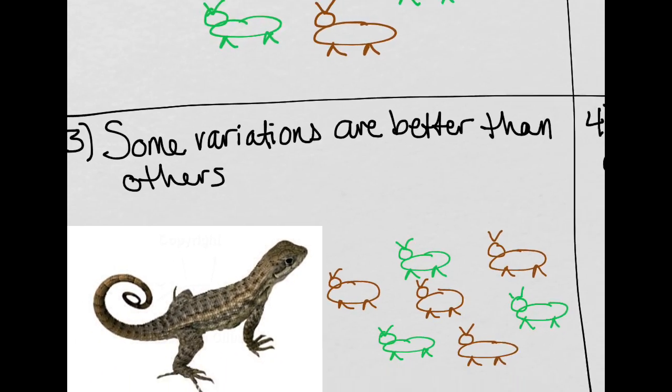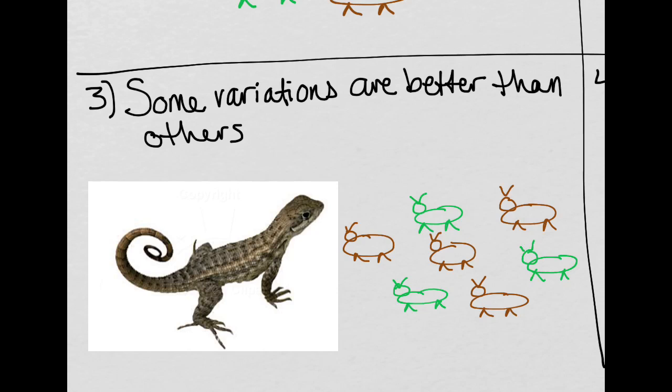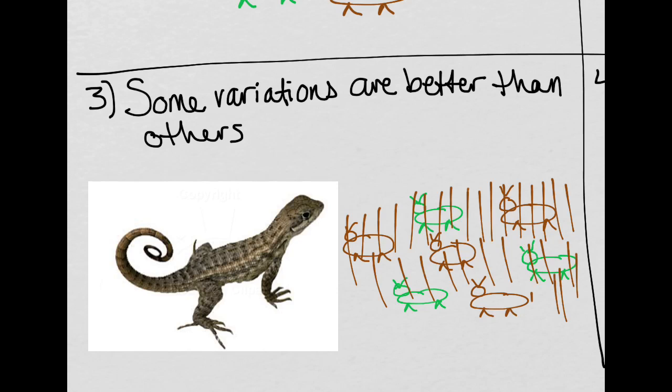And so, some variations are better to have than others. That is step number three. And so let's just say in this sample population, there happens to be a drought. So all of the grass turns brown. Okay. Who's most likely to get eaten? The green grasshoppers, of course.